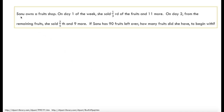The problem is: Sonu owns a fruit shop. On day 1 of the week, she sold one third of the fruits and 11 more. On day 2, from the remaining fruits, she sold two fifths and 9 more. If Sonu has 90 fruits left over, how many fruits did she have to begin with? 'To begin with' means when she started, or on day 1, how many fruits did she have before she sold anything?